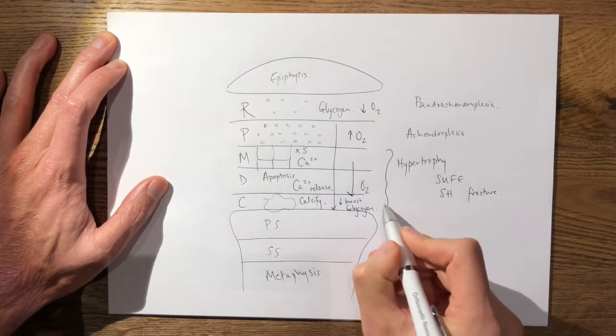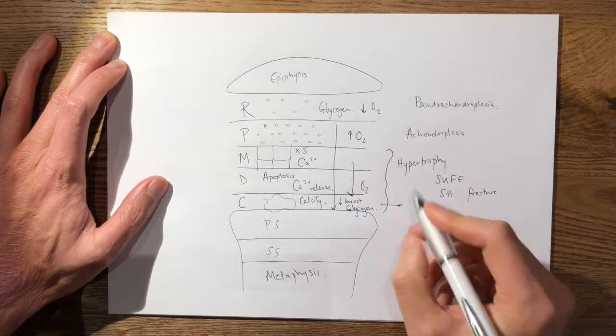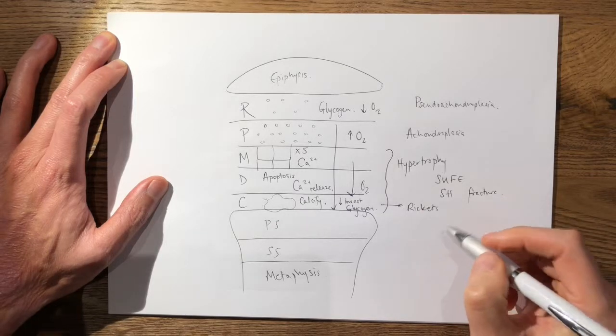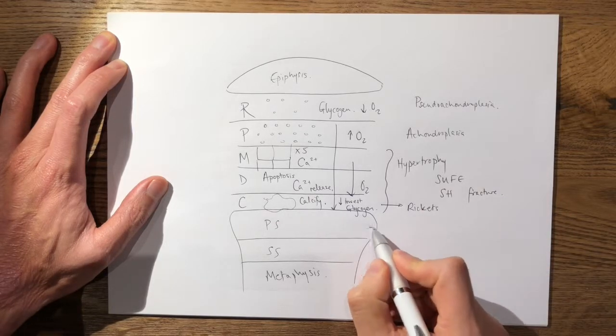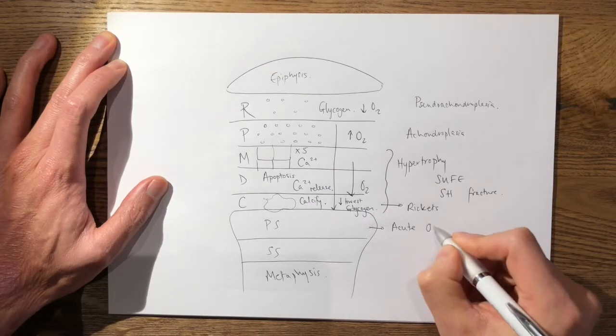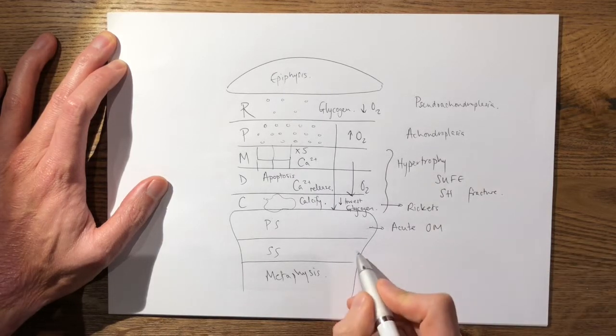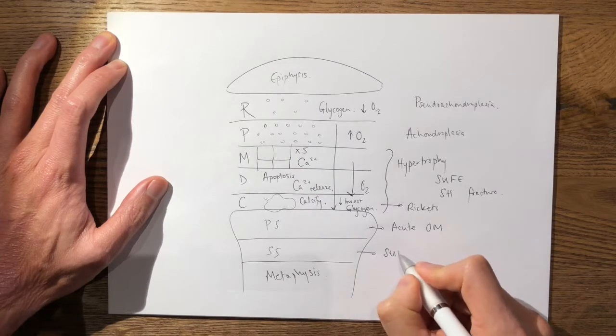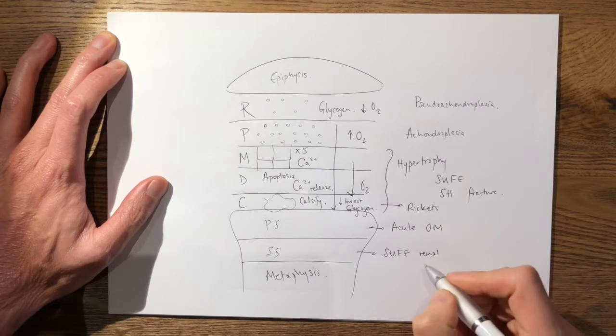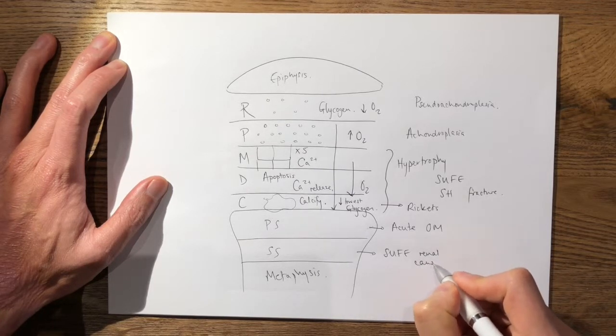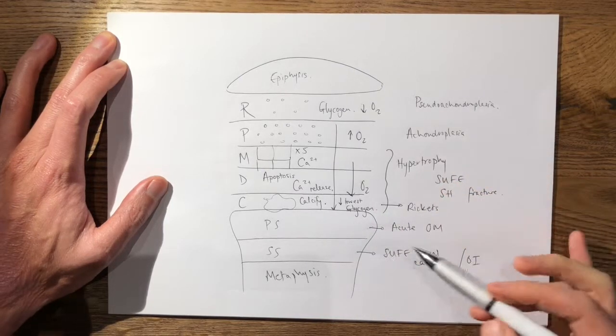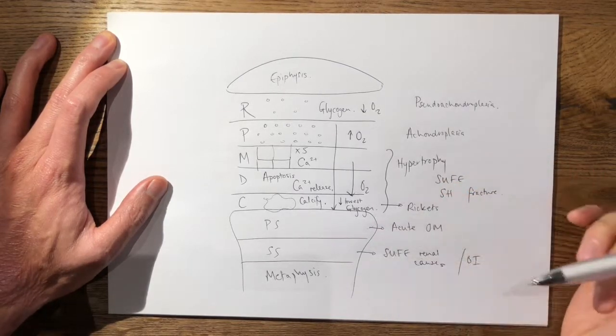But specifically to the provisional zone of calcification you have rickets or in adults osteomalacia. In the primary spongiosa you have acute hematogenous osteomyelitis. In the secondary spongiosa you have SCFE but secondary to renal causes, so renal osteodystrophy, and also osteogenesis imperfecta, and also your metaphyseal corner fractures occurring here as well.